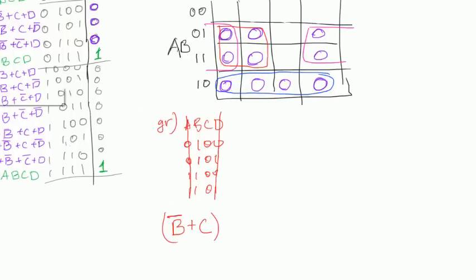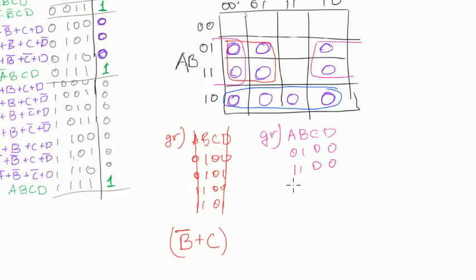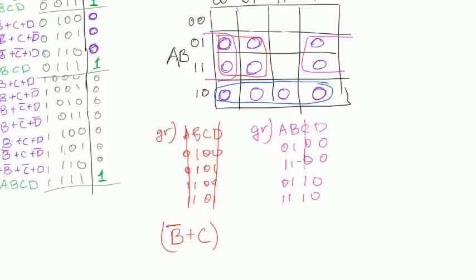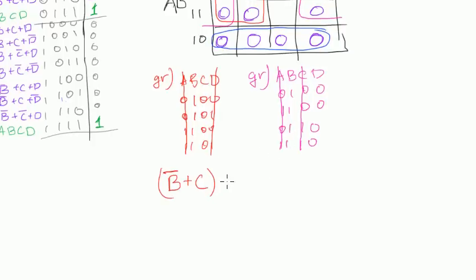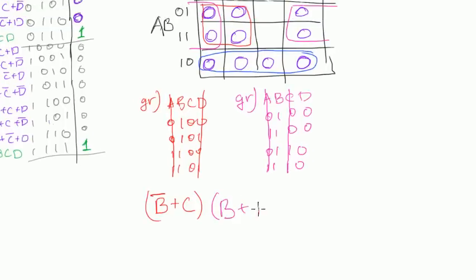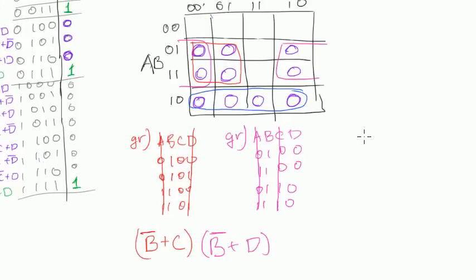Now let's do group purple. We have A, B, C, D. We see that C changes — that means we don't care for C. And A changes — that means we don't care for A. What we care about is B and D. So we write down our answer for the second term: B plus D. We negate B because we want it to be 0, and we only care for 0s in the case of product of sums form.